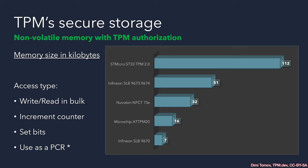The TPM's NVRAM provides four types of access. First and foremost, we have operations in bulk where we can write and read whole chunks of bytes into memory. This is limited depending on the vendor — usually the TPM can take up to 2048 bytes at once. The NVRAM of a TPM is measured in kilobytes, and the intention is to provide secure storage for the most vital, critical, and sensitive data.